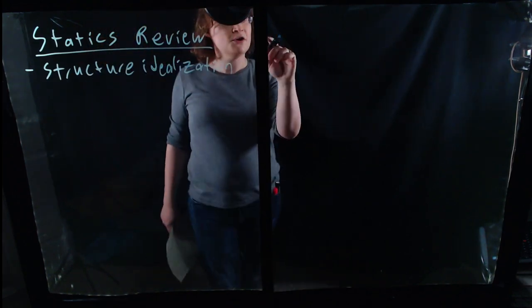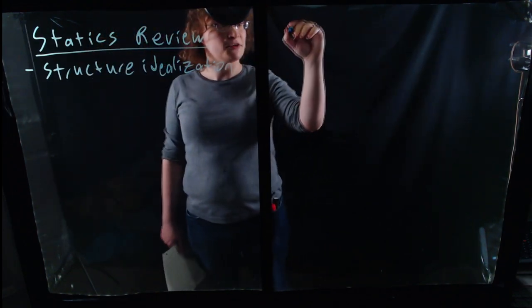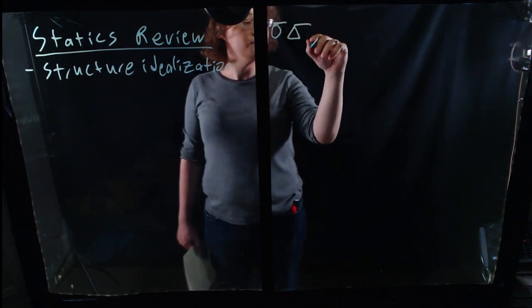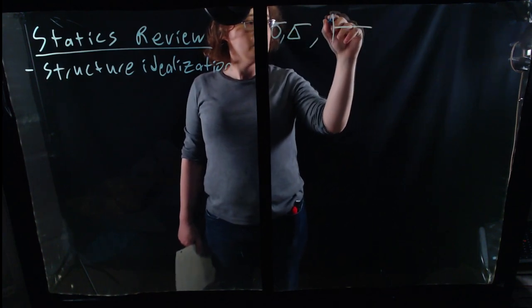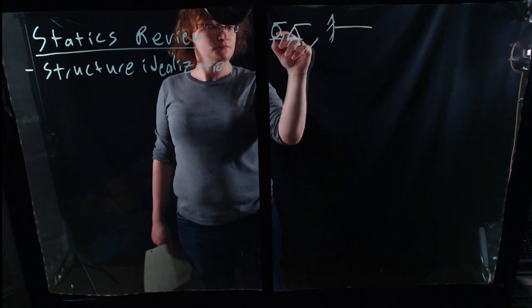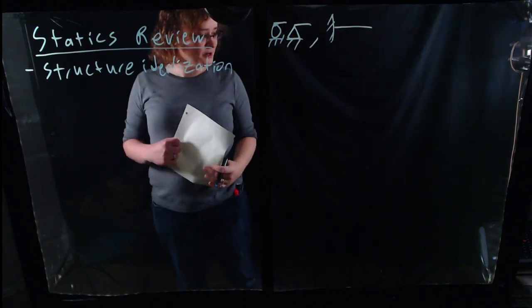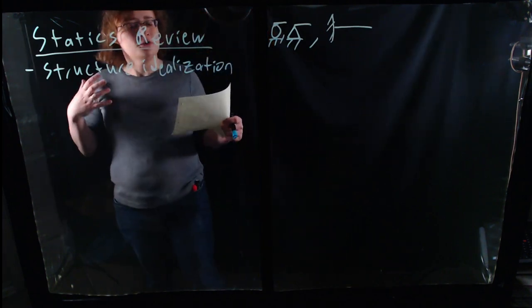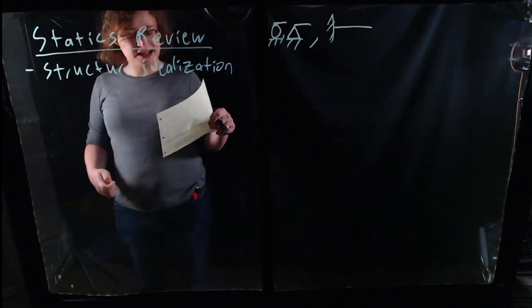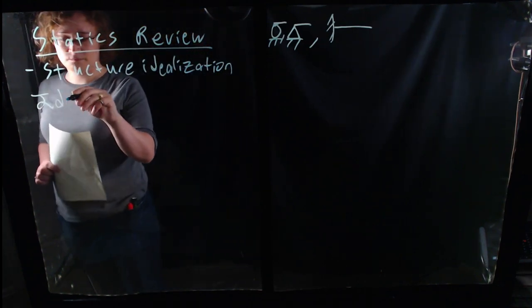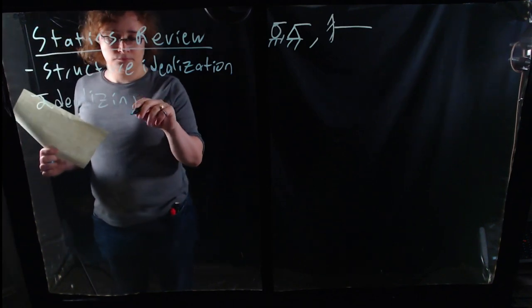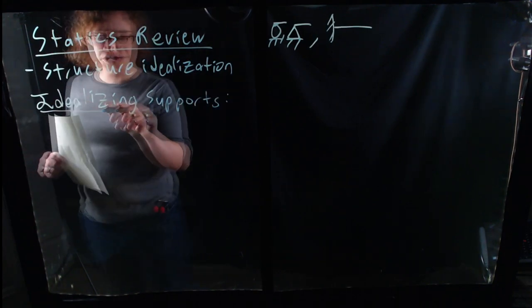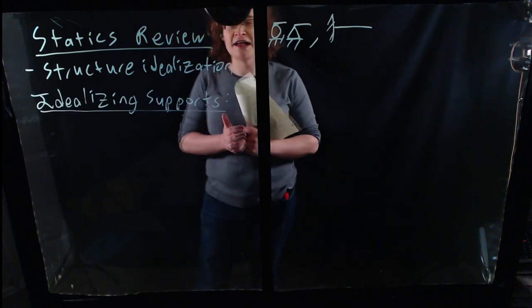Last time, as a review, we looked at three types of basic supports: roller supports, pin supports, and fixed supports. We explored last time what those represent. But at the beginning of class today, I just wanted to take a brief moment to consider what these represent in actuality. So let's first look at idealizing supports, and how we go from an actual structure to our engineering models that we're going to use for actual analysis and design.